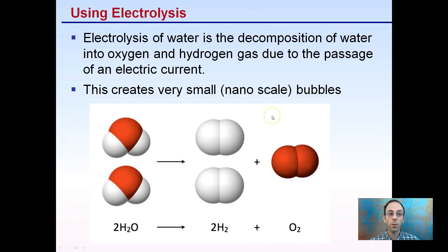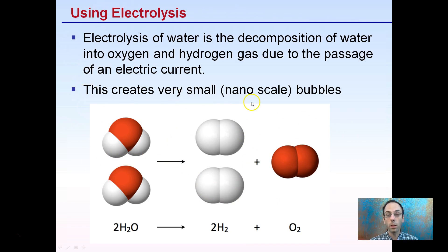Something you may not be familiar with, or may have heard of but not related to this aspect, is the use of electrolysis. Electrolysis of water is a decomposition of water into oxygen and hydrogen gas due to the passage of electrical current. We're separating water out into its hydrogen and oxygen components, and this process of electrolysis creates very small nanoscale — really, really small — bubbles that form.